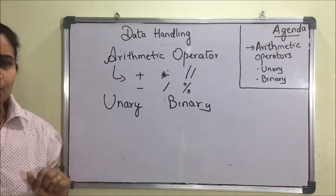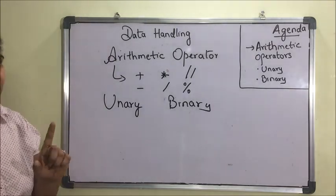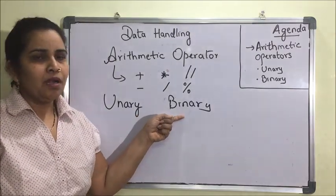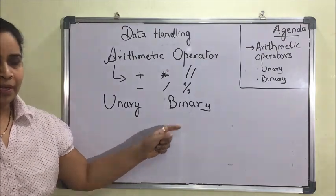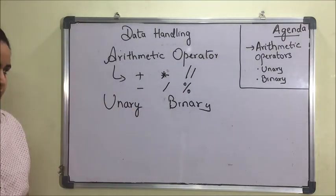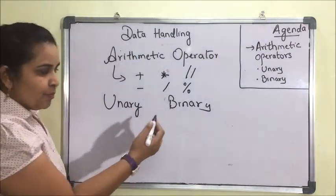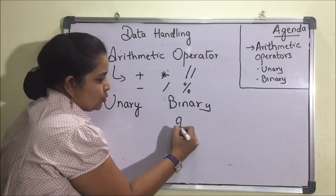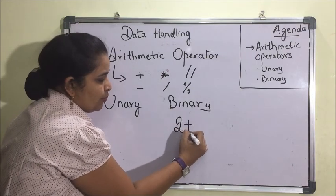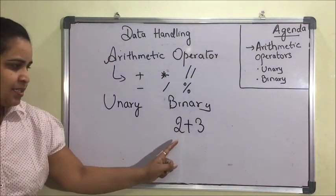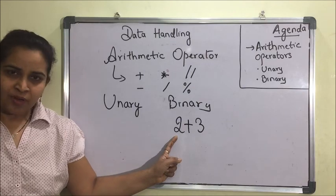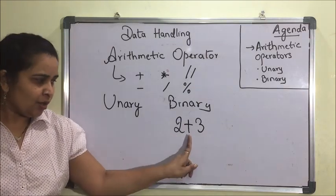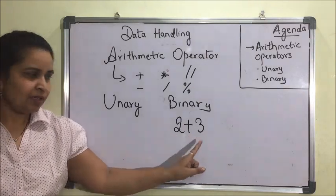Unary operators are those operators which need only one operand. Binary operators are those operators which need two operands. For example, if I have written 2 plus 3, then 2 is one operand and 3 is another operand, and plus is the operator.